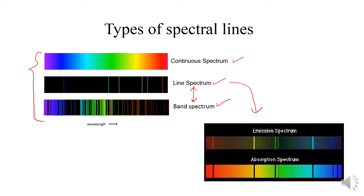Line spectrum की further दो types हैं: emission spectrum and absorption spectrum। In case of emission spectrum, जैसा कि आप diagram में देख सकते हैं, हमारे पास particular रोशन lines हैं क्योंकि यहाँ light material या specimen से emit हो रही है। In case of absorption spectra, हमारे पास dark lines हैं, और यह dark lines show करती हैं कि system या specimen energy को absorb कर रहा है।